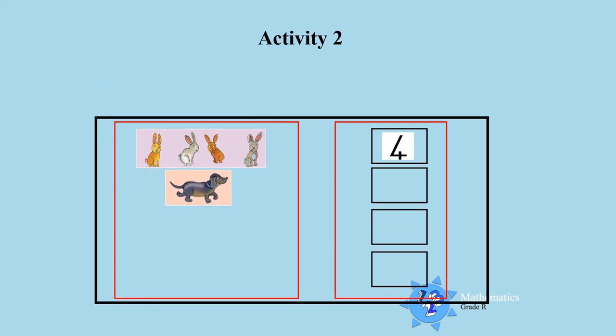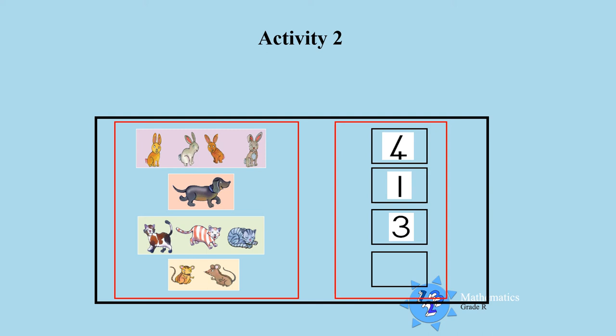How many dogs do you see? Yes, there's only one dog. Excellent work. How many cats do you see boys and girls? Yes, there's 3 cats. That is very good. And how many mice do you count? 1, 2, yes, there's 2 mice. That is so good boys and girls.